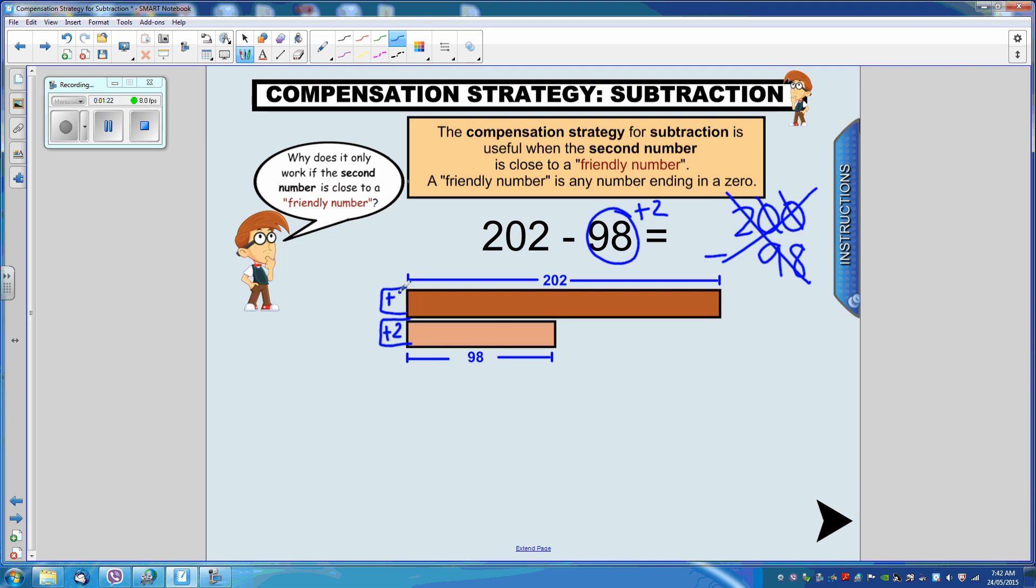So this is different to what we do when we're using compensation for addition. When we're using compensation for subtraction, whatever we do to that second number, we need to do to the first number as well. So we've created 98 here plus 2 is 100, and we need to add 2 to this number as well for the compensation to work. So we've got 202 plus 2 is 204.